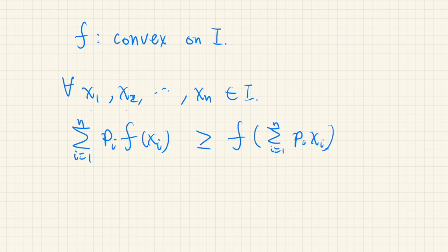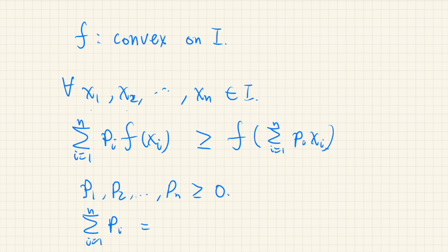Here the weights P_i — P1, P2, and so on — are a kind of probability measure. They are positive or zero and they add up to one, so the sum of P_i is one. So P_i are weights. The weighted average of the functional values at these points is always greater than or equal to the functional value of the average value of the points.